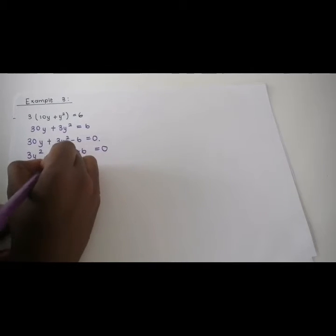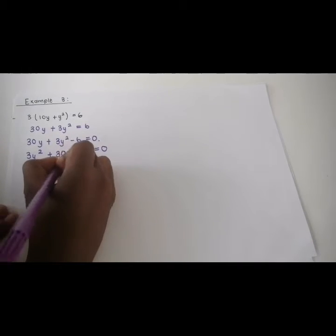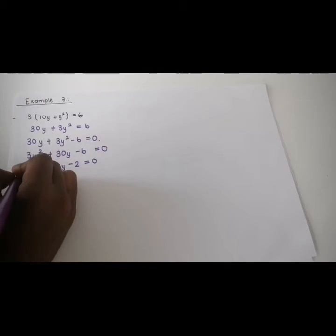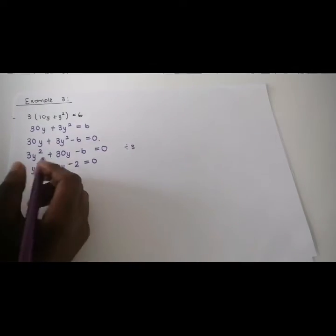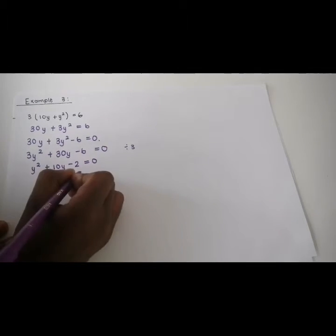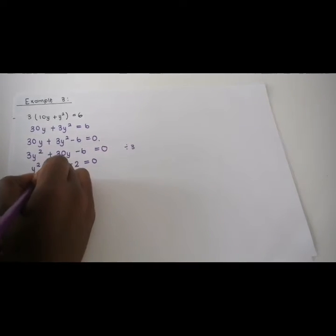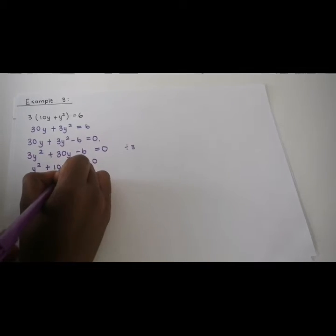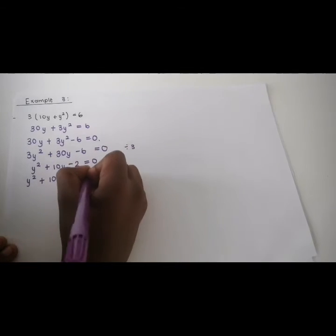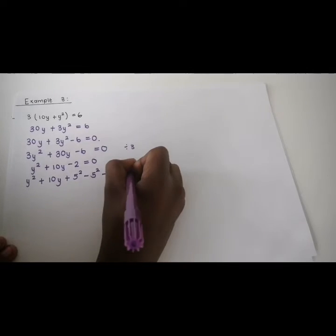So it's y squared plus 10y minus 2 equals 0 after dividing by 3. Now we can start completing the square: y squared plus 10y, we have to half 10 — half of 10 is 5 — so plus 5 squared minus 5 squared minus 2 equals 0.